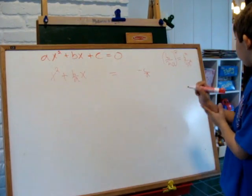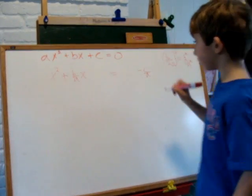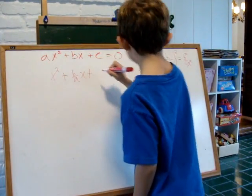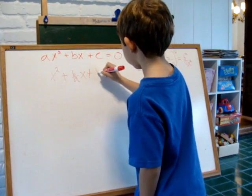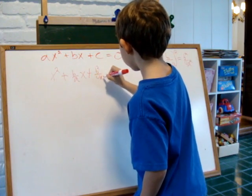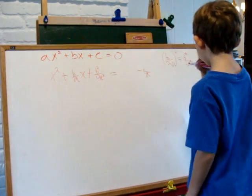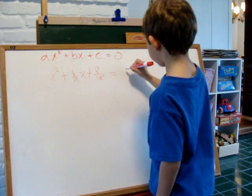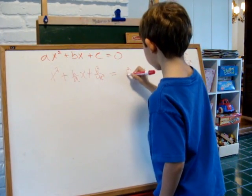And we add that number to both sides of the equation. Plus b squared over 4a squared on the left. Plus b squared over 4a squared on the right.